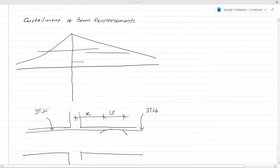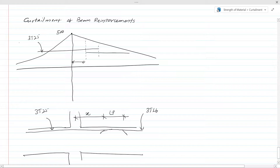We have to know the bending moment diagram. Say this bending moment here will be 500 kN. These 3T25 bars have a bending moment capacity of 550. We are going to curtail to 3T16 bars, which have a bending moment capacity of 300, for example.